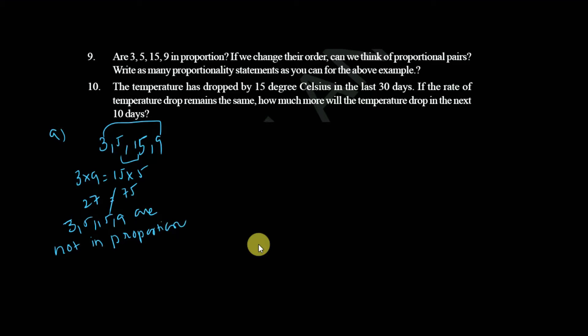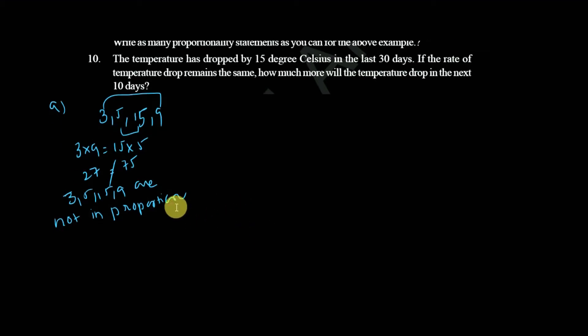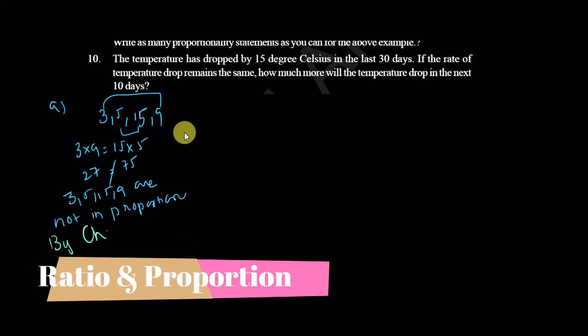So by changing order, we are going to think by changing order if it is in proportion or not. Now I am changing order. So let's take 5, 3, 15, 9, if it is possible or not.